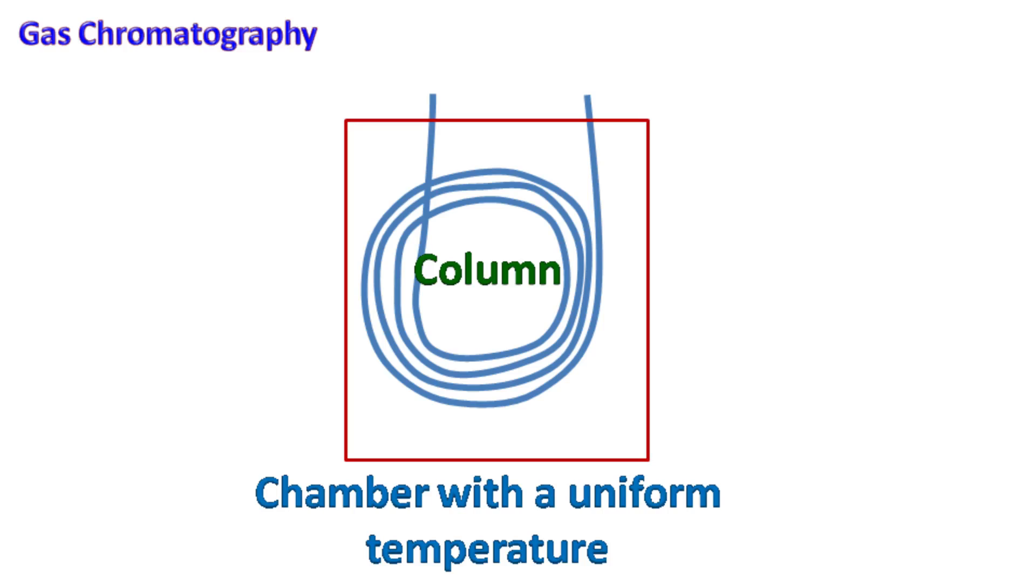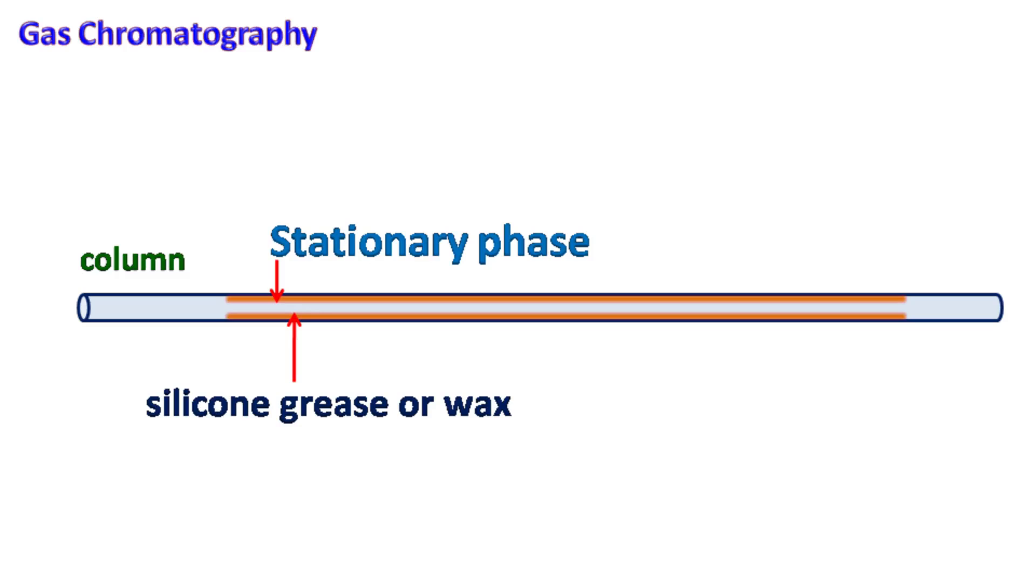The stationary phase is packed in the inner wall of the column. The stationary phase is made up of silicon grease or wax which can withstand a high temperature. The mobile phase used is usually an inert gas like helium or unreactive gas such as nitrogen.